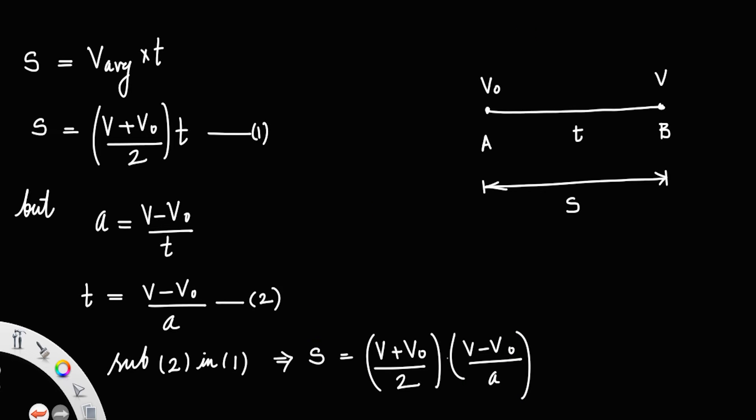That is s equals, you can multiply the numerators: (v + v₀) times (v - v₀) divided by 2a.